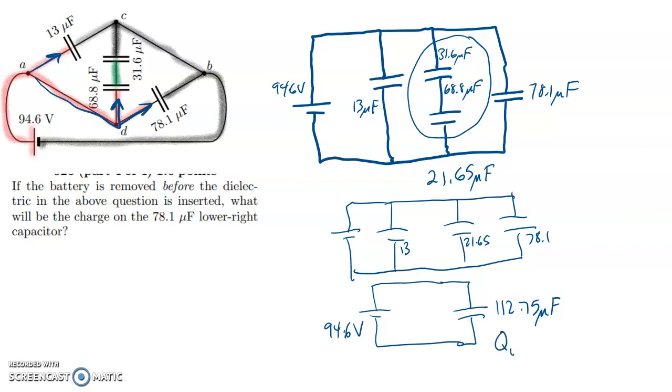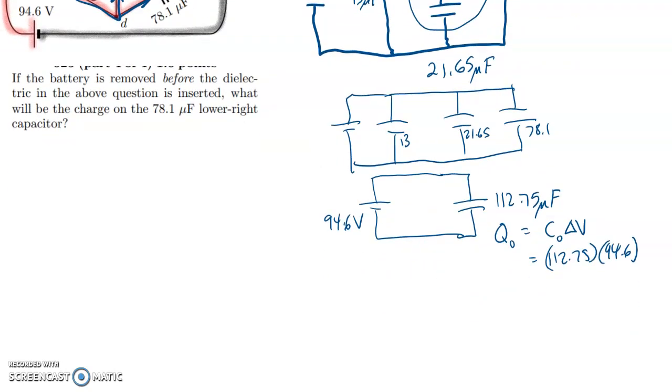The original amount of charge is the original capacitance times the delta V. So that's 112.75 times 94.6. Let's see what I get. Big number 10,666. No wonder this was an evil problem. 0.4 microcoulombs.